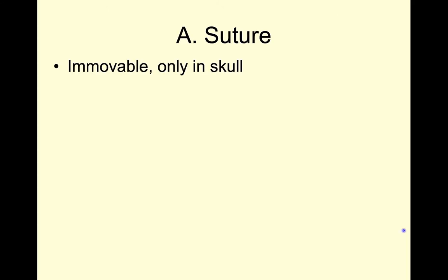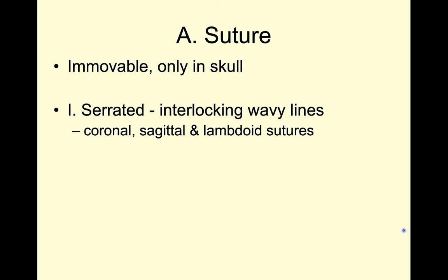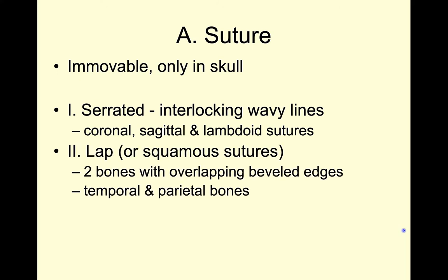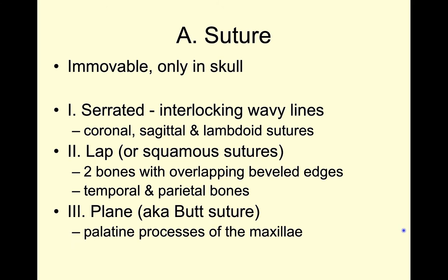Sutures are essentially immovable and they are only in our skull. We have three types. The first type is a serrated suture, where we have these interlocking wavy lines. We also have a lap suture — this was the squamous suture between the parietal and the temporal bone, where two bones are overlapping and have these beveled edges. Third is our plain suture or butt suture, where the two bones butt up next to each other. We saw this with our palatine processes off of those maxilla bones.